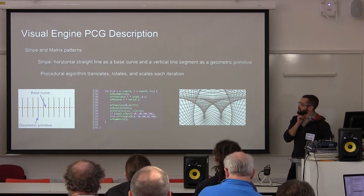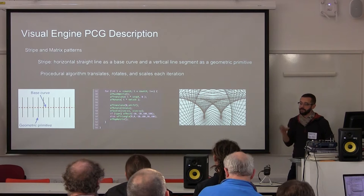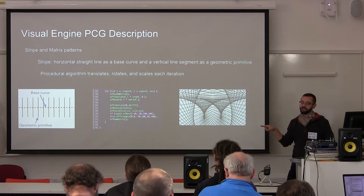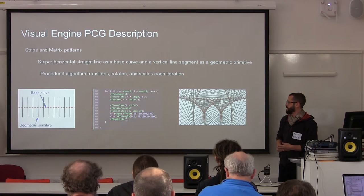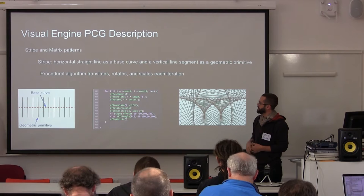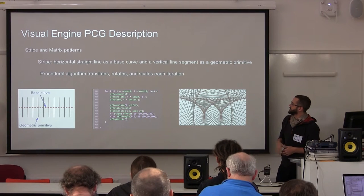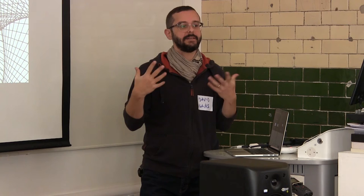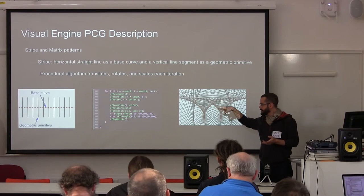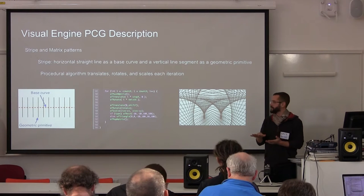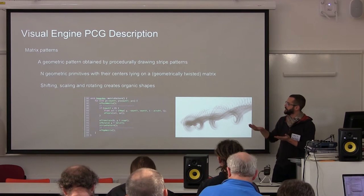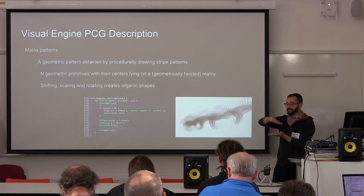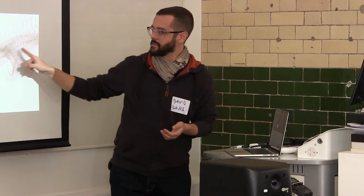In the visual engine, we took data from Pure Data — running within iOS — to Open Frameworks to create stripe and matrix patterns. It's really a matrix pattern that contains a stripe pattern. That's the procedural content generation basis for the visual engine, where we start with a base curve and a very simple geometric primitive: a horizontal straight line as a base curve and a vertical line segment as the geometric primitive. The procedural algorithm translates, rotates, and scales at each iteration, so every time we pop the matrix, it has shifted and rotated.